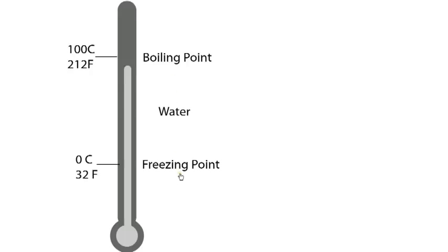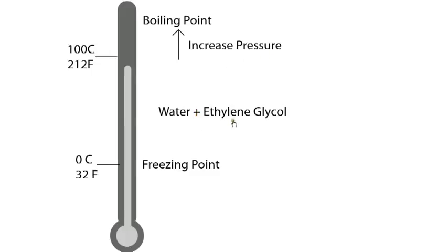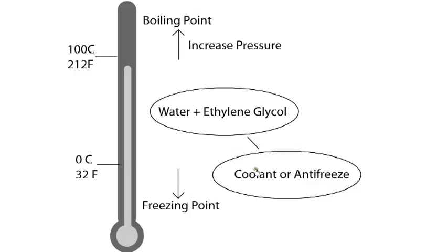To increase the boiling point, the pressure in the system is increased and to lower the freezing point, a chemical antifreeze is added. Coolant antifreeze or ethylene glycol also contains rust inhibitors to prevent corrosion and has added lubrication properties.